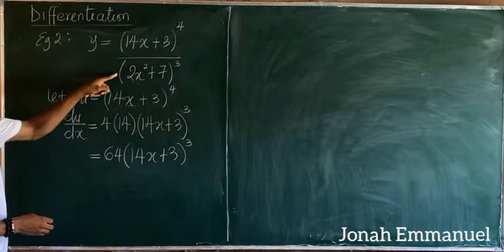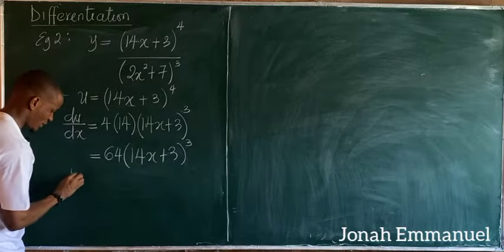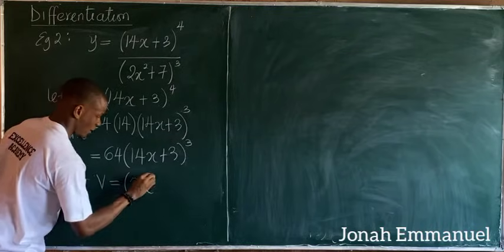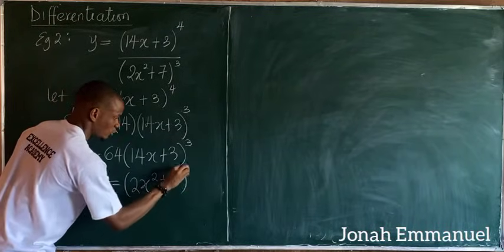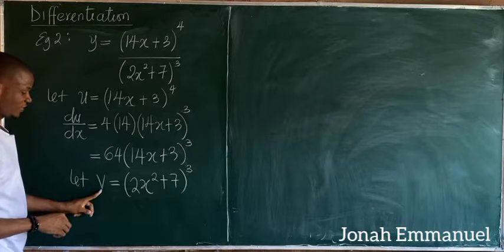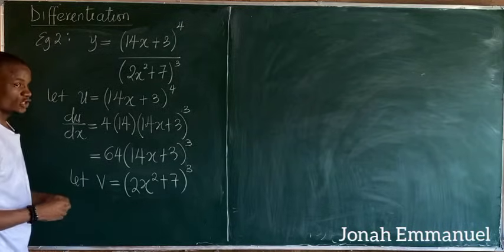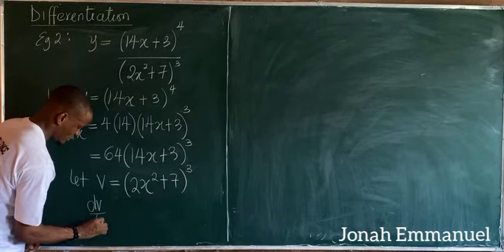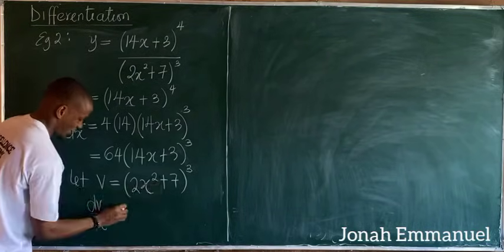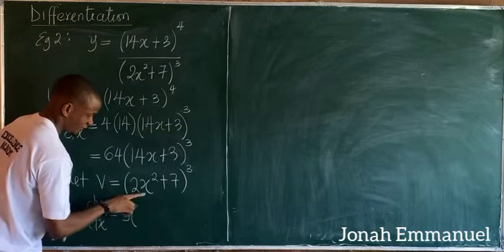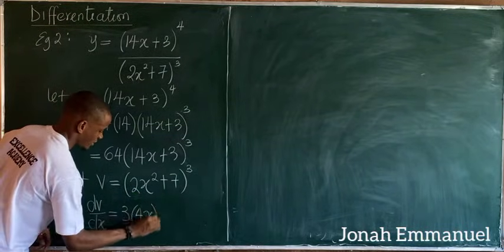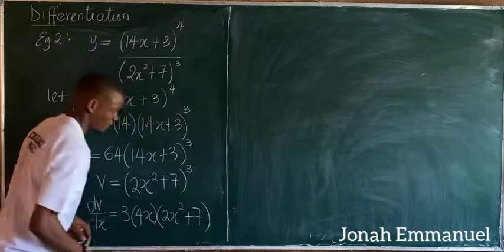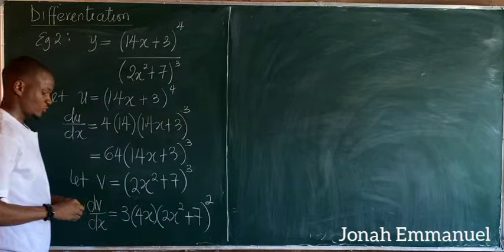Next, I'll call the denominator v. So let v equal (2x² + 7) all to the power 3. I'll differentiate v with respect to x using the chain rule shortcut: write the power 3, differentiate the inner expression (2x² + 7) to get 4x, repeat the bracket (2x² + 7), then subtract 1 from the power to give 2.